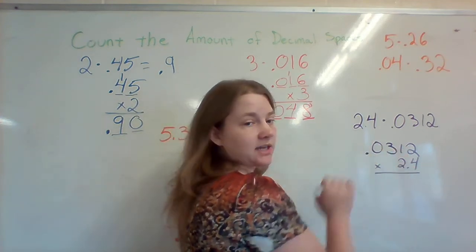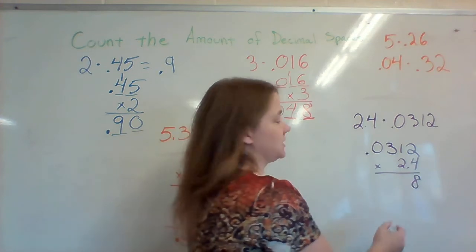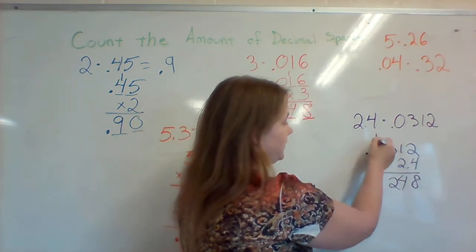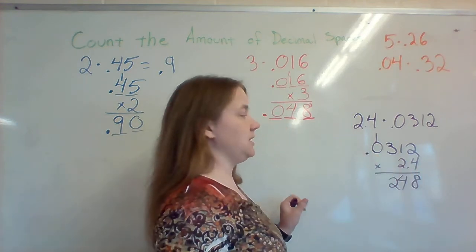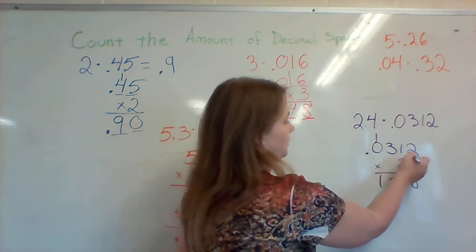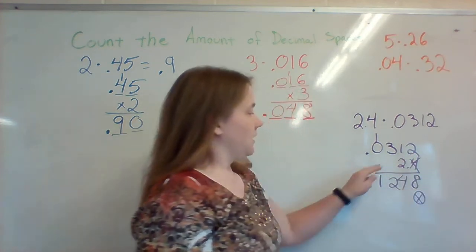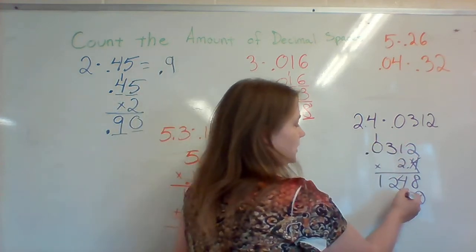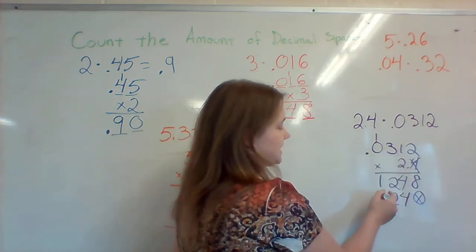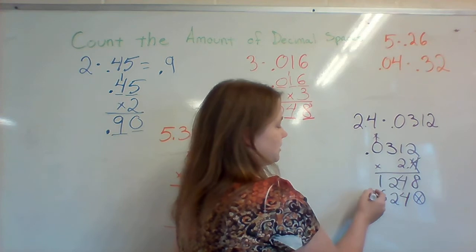So we're going to multiply. 4 times 2 is going to be 8. 4 times 1 is 4. 4 times 3 is 12. And 4 times 0 is 0 plus 1 is 1. Done with the 4, so I'm going to cross that off. Now I've got this 2 here. 2 times 2 is 4. 2 times 1 is 2. 2 times 3 is 6. And this was from the other thing, so I don't need to worry about that. 2 times 0 is 0.